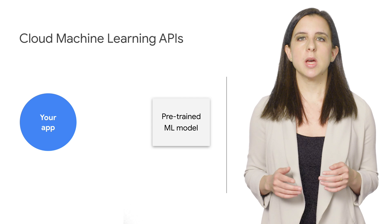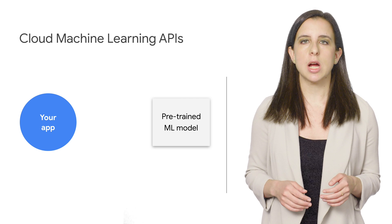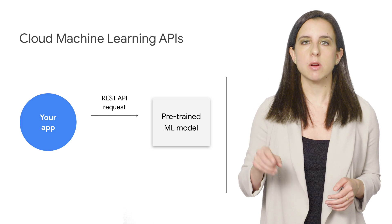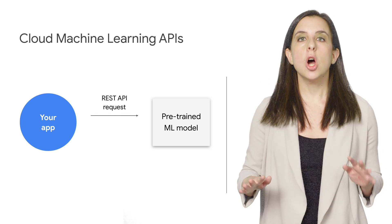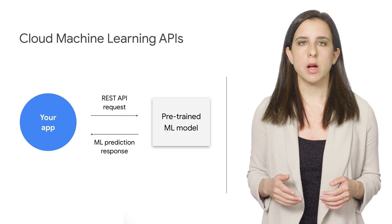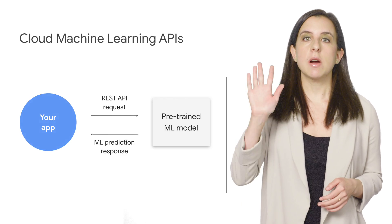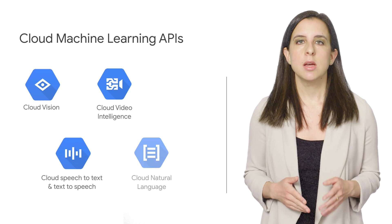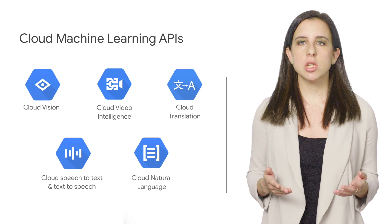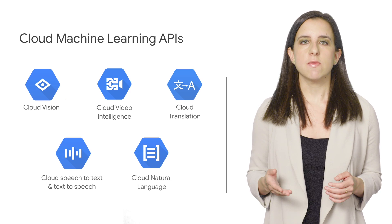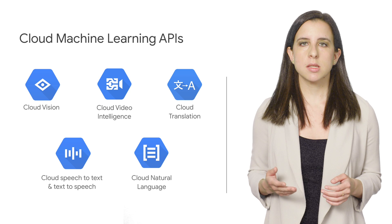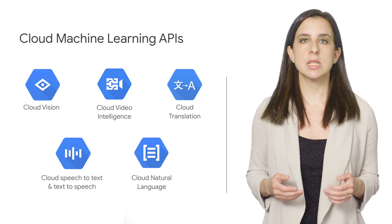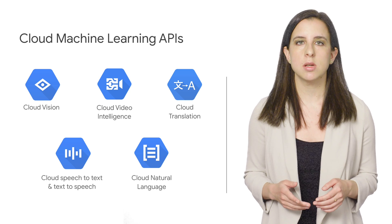Our ML APIs make it easy to add machine learning to your app with a single REST API request — no ML expertise or training data required. We've got five APIs to help you with common ML tasks: analyzing images, analyzing video, converting audio to text, analyzing text, and translating text into over 100 languages.